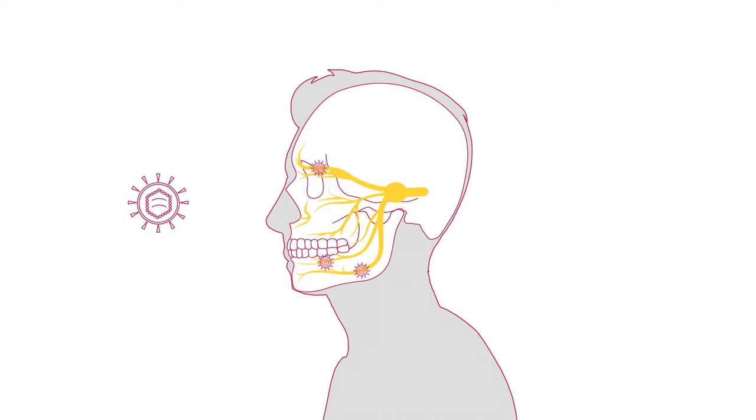After the initial infection, the virus migrates along the nerve fibers to the nerve node, called ganglion. Since on its way it sheds its viral envelope, it is no longer recognized by the immune system as an invader.